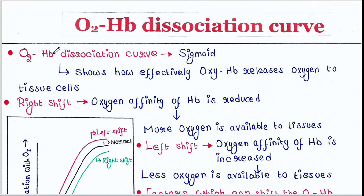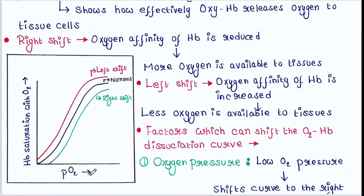The oxygen hemoglobin dissociation curve is always sigmoid. This curve shows how effectively oxyhemoglobin releases oxygen to tissue cells. Oxyhemoglobin means oxygen-bound hemoglobin. On the x-axis we can see the partial pressure of oxygen, and on the y-axis it is the hemoglobin saturation with oxygen. The black curve is the normal curve.